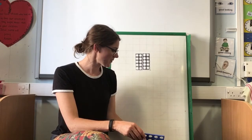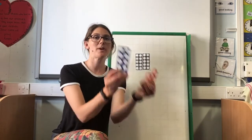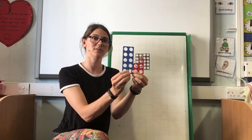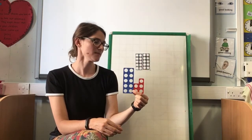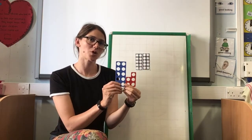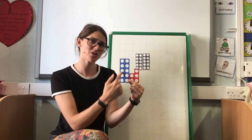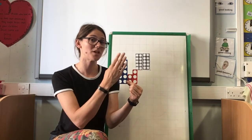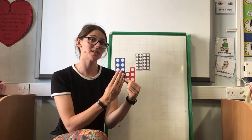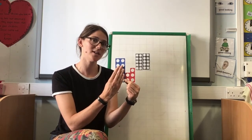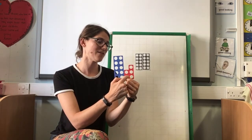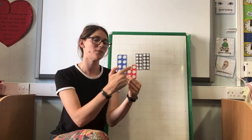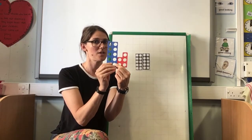Now let's just practice our teen numbers. Some of them you may know just from looking at them. So you might know that a 5 and a 10 is 15. If you don't know that for sure, you can look at the 10. Do we need to count up all these spots? No, we don't need to count all the spots because we know that this is 10. So we can put 10 in our head: 10, 11, 12, 13, 14, 15. So we know a 10 and a 5 is 15.